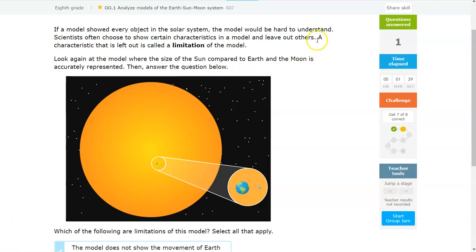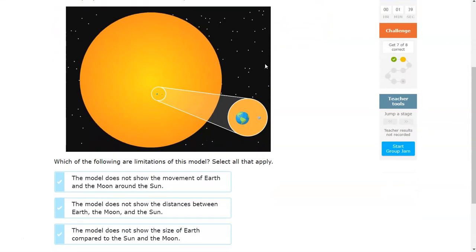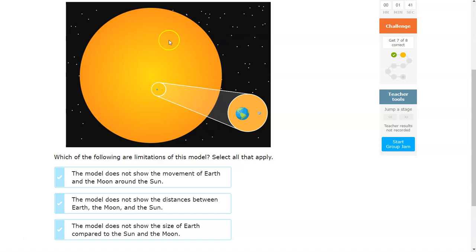So the first thing that I want to go over is this idea here. A characteristic that is left out is called a limitation of the model. So when we're looking at this question, the question is, what is left out of this model?